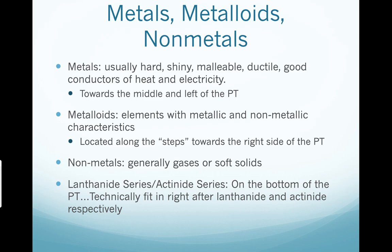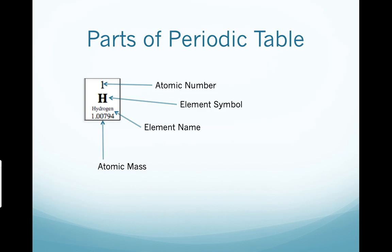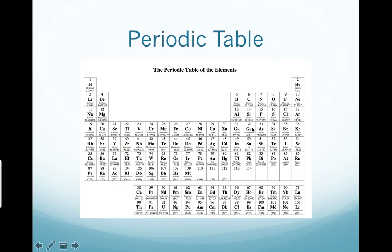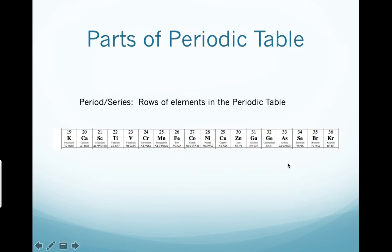Metalloids are just to the right of the metals. These are elements with metallic and nonmetallic characteristics. These are the steps along the right side of the periodic table. Just really quick. These are here. Those are what we call metalloids.